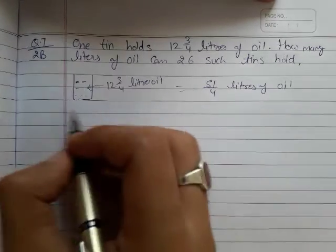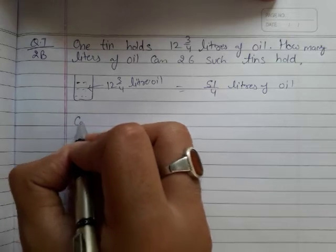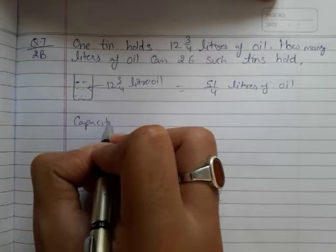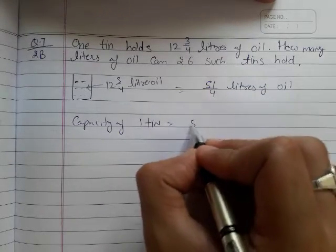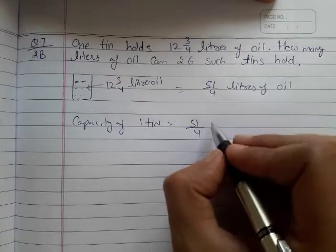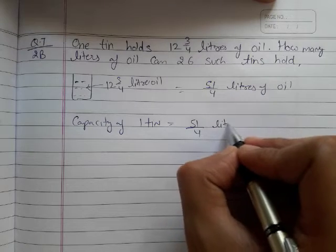So from here we can write the capacity of one tin is equal to 51 upon 4 liters of oil.